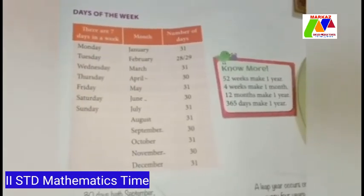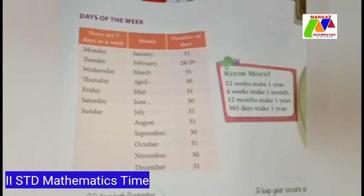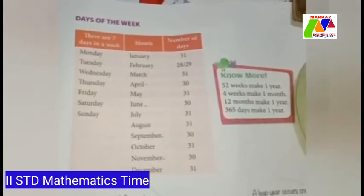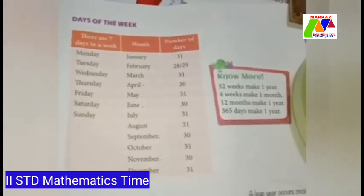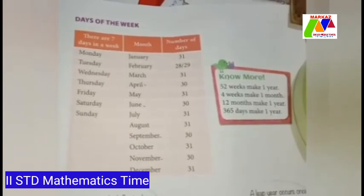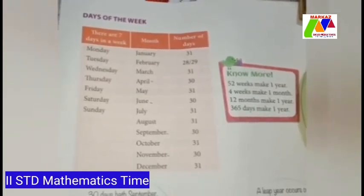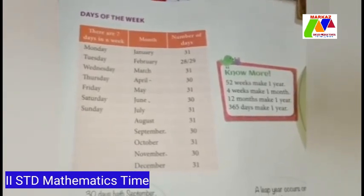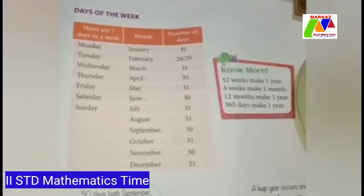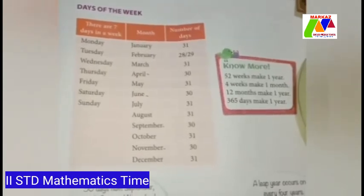Generally, a month has 30 days, but some months contain 31 days also. 30 days have April, June, September, and November. All the rest have 31 days, except February alone which has 28 days and 29 in each leap year. A leap year occurs once every 4 years — for example, 2008, 2012, 2016, and 2020 were all leap years.